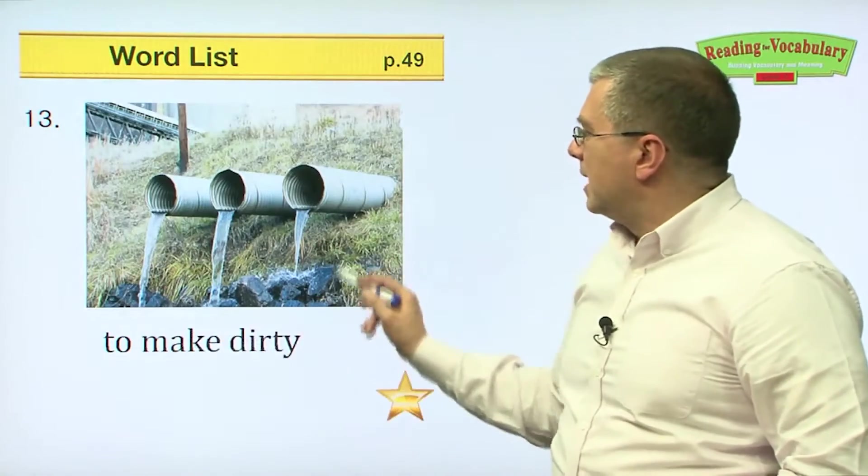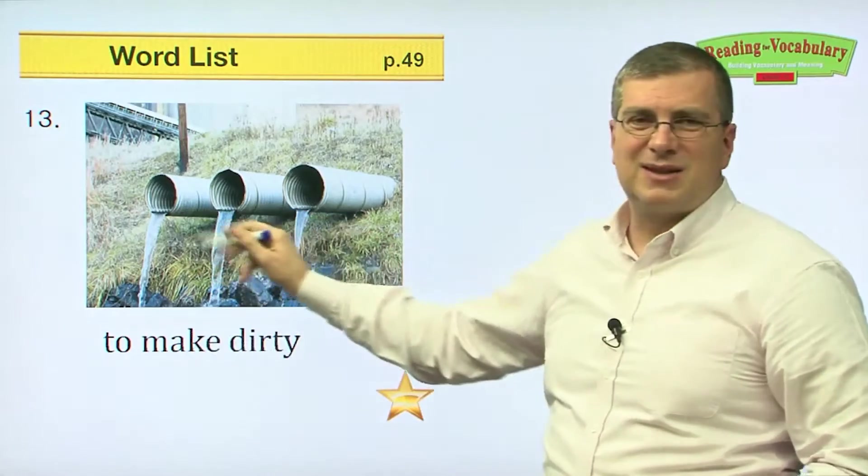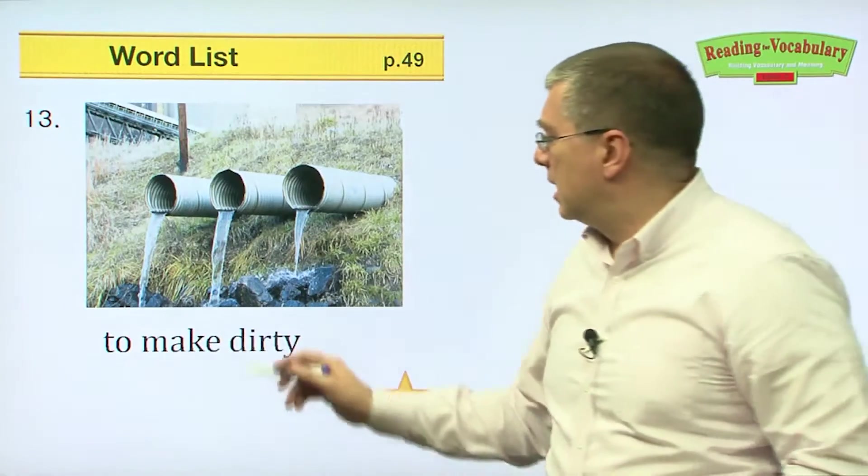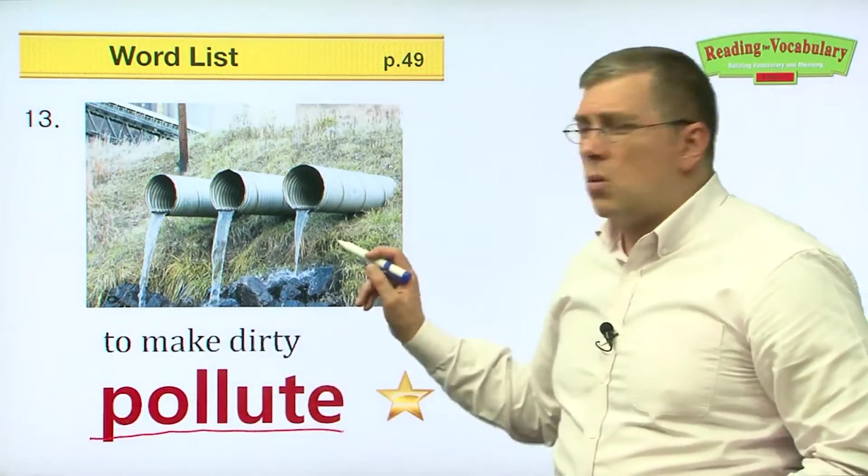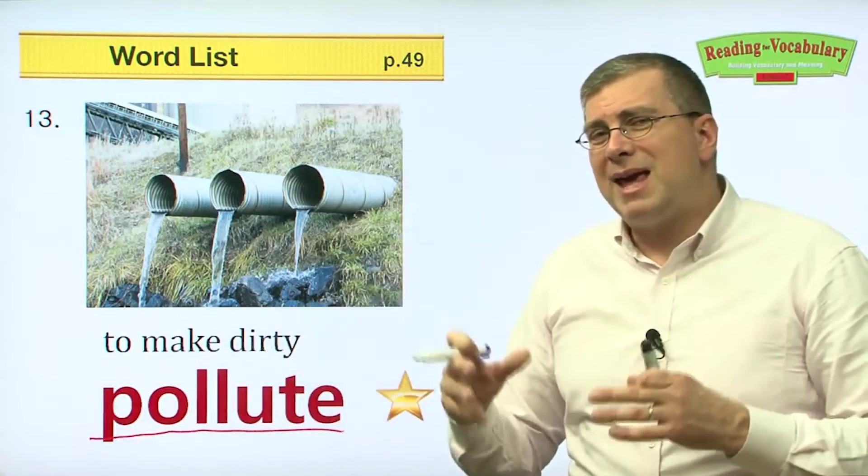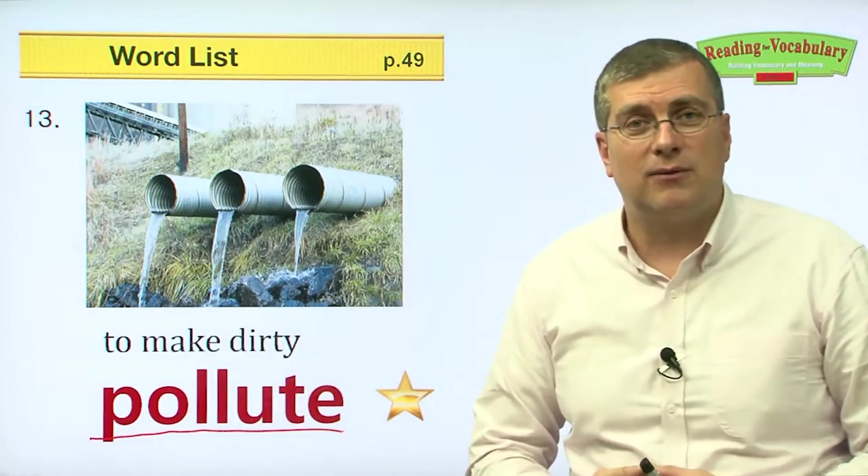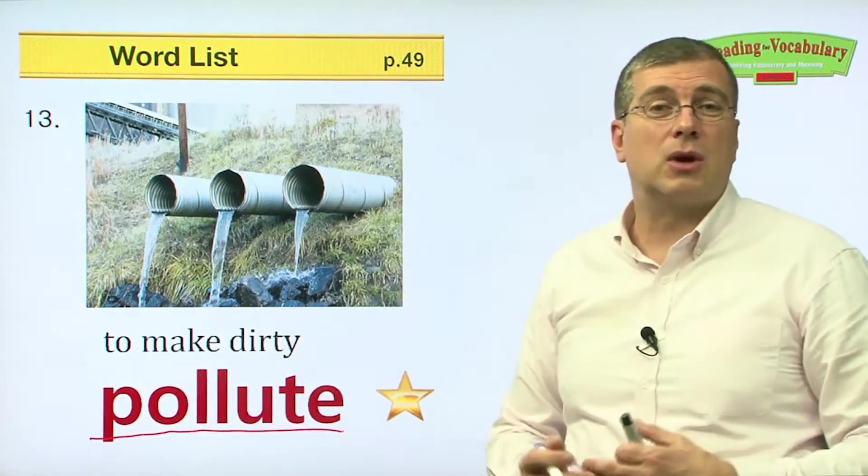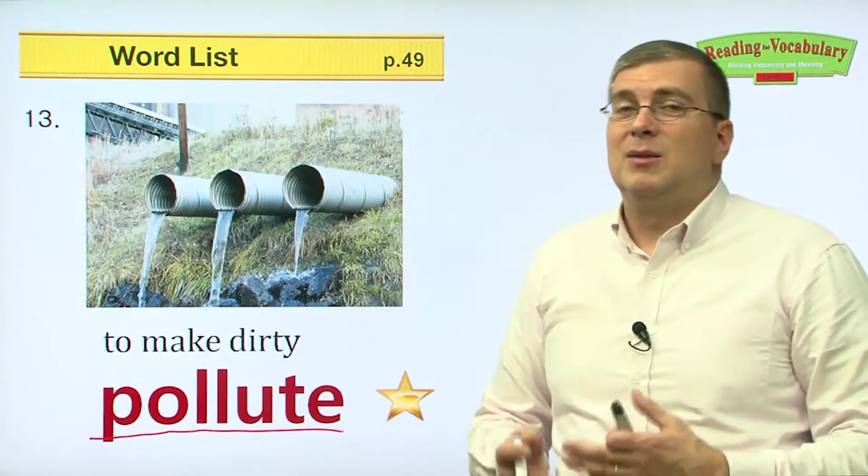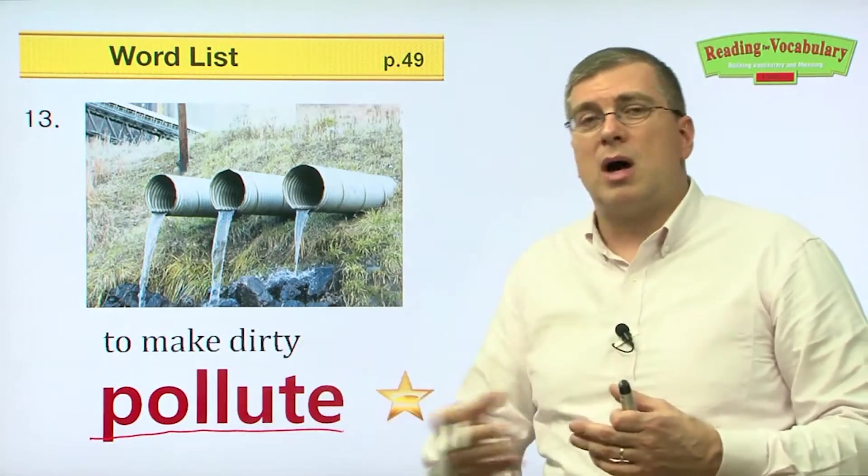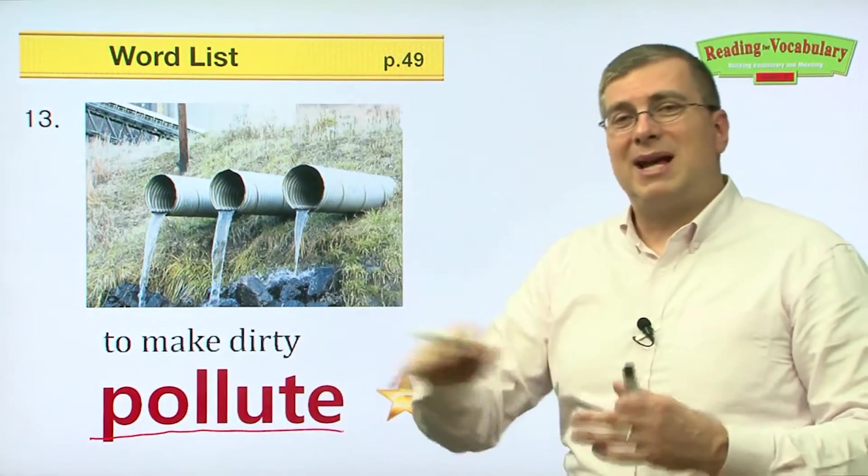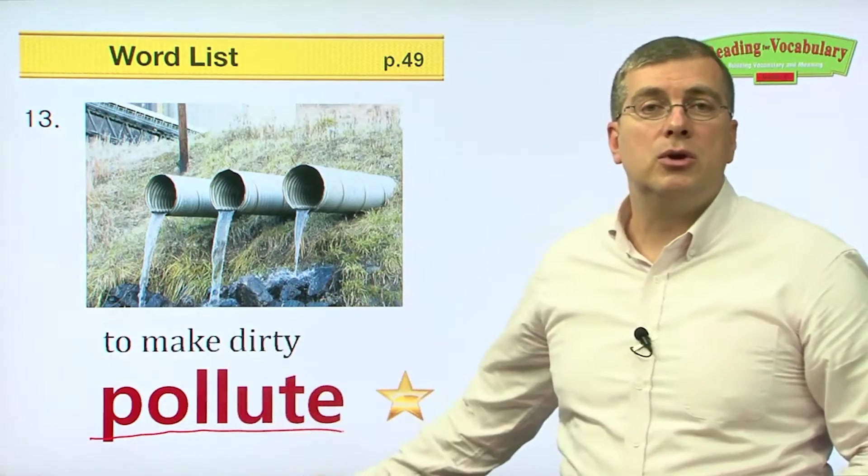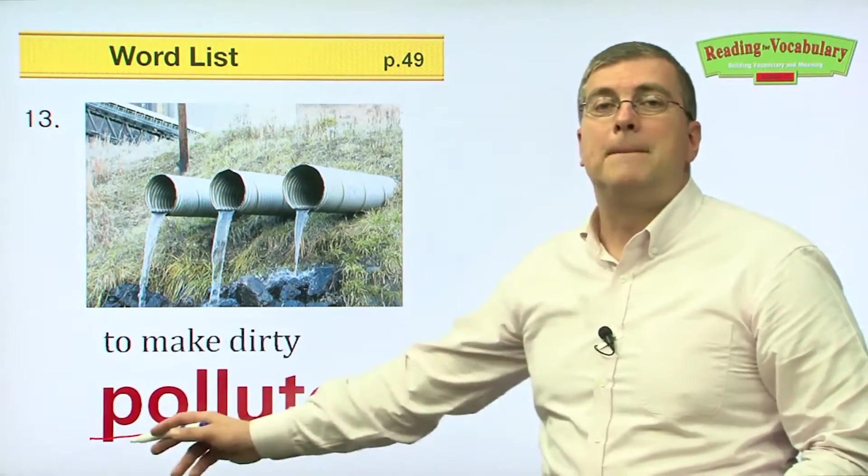Number thirteen. To make dirty. Imagine that this is not water. Maybe this is some chemical that's coming out of these pipes into the stream. It's making the stream or the river dirty. What is it doing? It's polluting. So when we make the environment dirty, we are polluting the environment. Sometimes factories or industrial places, industrial companies will pollute the environment because of what they're doing. Their activities make dirty water, dirty air, or things that we throw away in the ground, so dirty land. If we make something dirty, we are polluting the environment. Pollute.